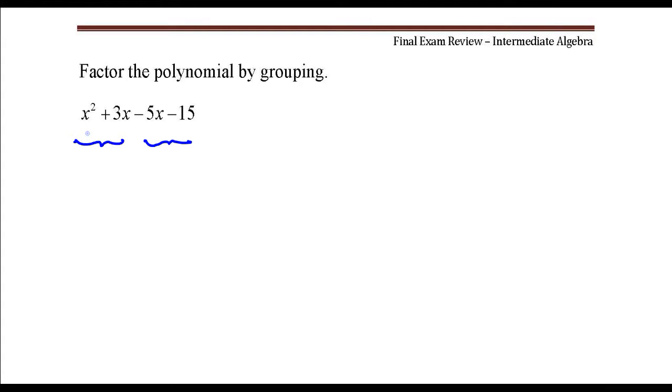So the greatest common factor of the first two terms is an x. The greatest common factor of the last two terms, that would be a negative five.